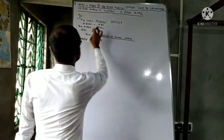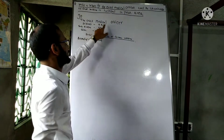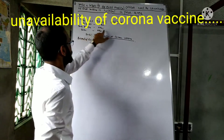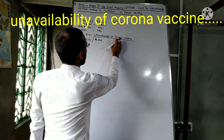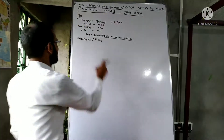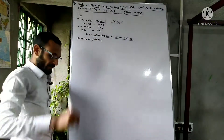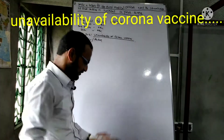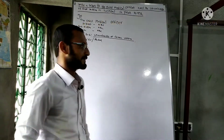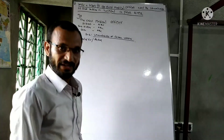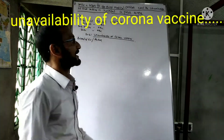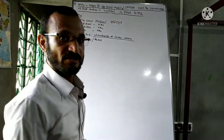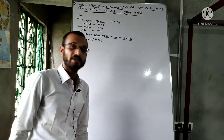The letter is addressed to the Chief Medical Officer, District ABC (your district's name), Subdivision (your subdivision name), State (your state's name). The subject is: unavailability of coronavirus vaccine. Then write 'Respected Sir/Madam.' My writing is quite small so it will take some time — please watch this video till the end and cooperate with me.